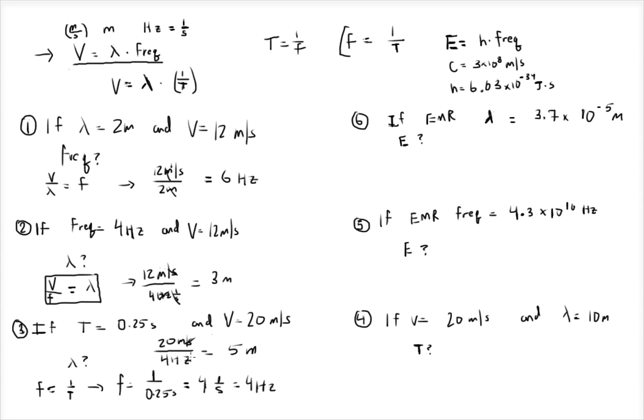The seconds and the 1 over seconds cancel because dividing by 1 over seconds eliminates those units, so they cancel. Just be aware that period and frequency are the inverse of each other. If you have a period of 0.25 seconds, that means it takes 0.25 seconds to complete one full cycle, which means in 1 full second you'll get 4 complete cycles.